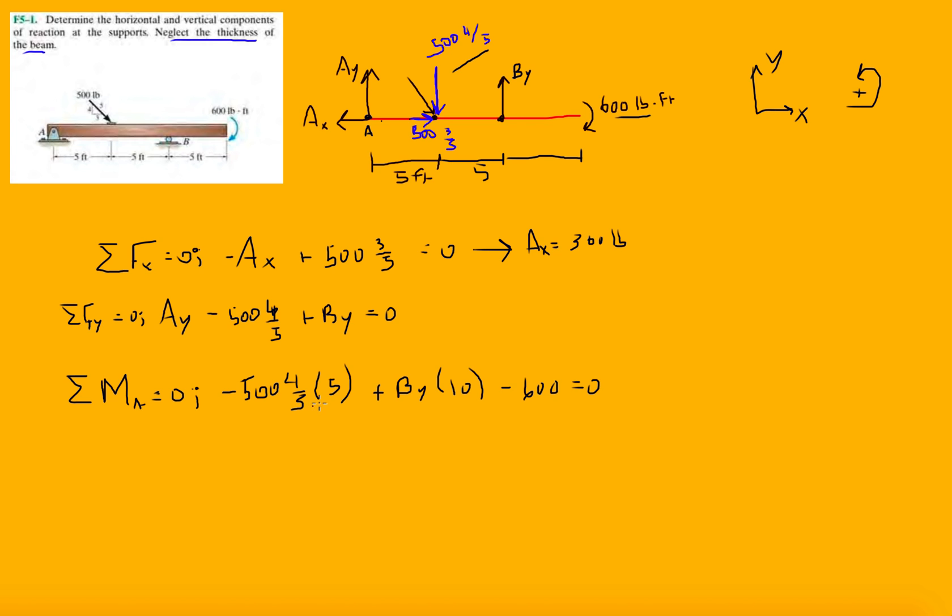All right. So let's see. There's going to be By equals something divided by 10. Let's move this over. So that's 500 times 4, that's 2,000. Move it over to that side. Move this 600 over to that side, so that's plus 600. And then we have 2,600 divided by 10. So we're left with 260 pound force in the By direction.